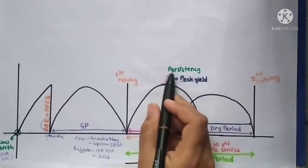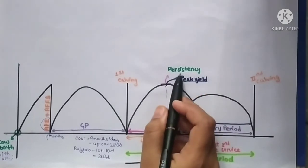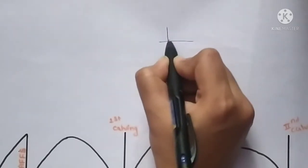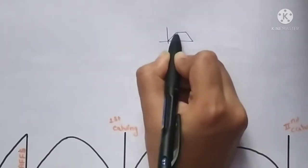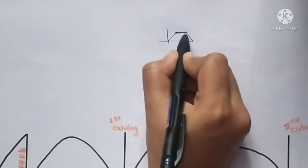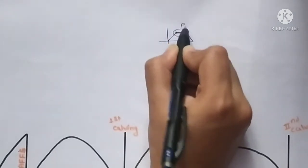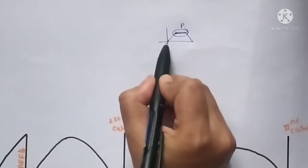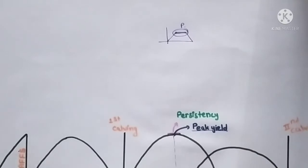Here, the persistence is very low. Suppose the graph is like this—here is the peak yield. If the peak yield persists or maintains for a longer period, it is known as persistency. As I told in my previous video, high persistence is necessary to maintain a high level of milk production.